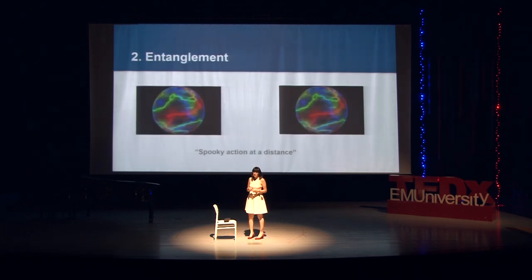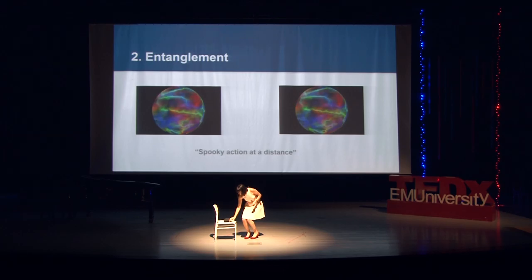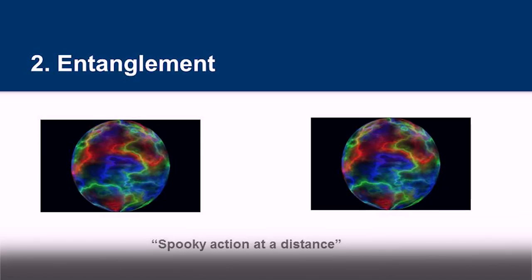The second concept is entanglement. Let's say I have two particles and I put them into an entangled state. After that, they will act like pairs — like couples. If I do one operation on the first particle, it will affect the second one at the same time, even if they are really far away from each other. I can send the second particle to another planet or another galaxy — same effect. Einstein called this 'spooky action at a distance.' They are mimicking each other.